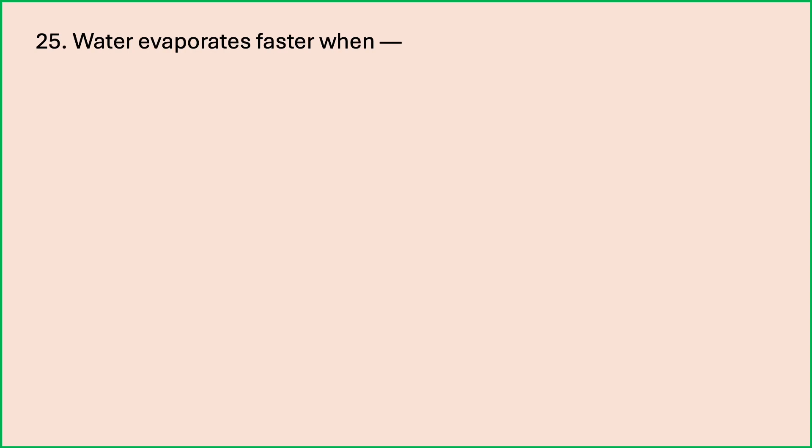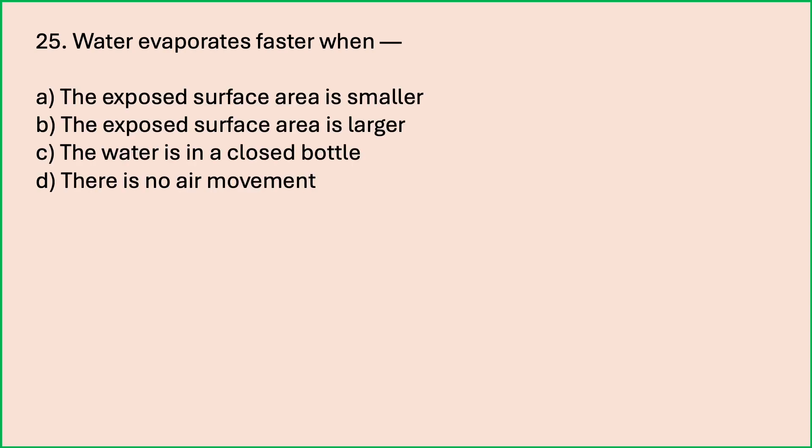Water evaporates faster when: the exposed surface area is smaller; the exposed surface area is larger; the water is in a closed bottle; there is no air movement. Which is the correct answer? Water evaporates faster when the exposed surface area is larger. If you spread out water on a plate, its area exposed to air is larger, therefore evaporation is faster.